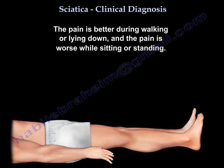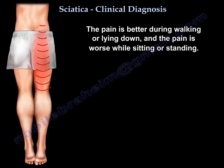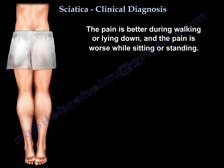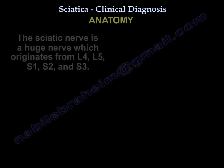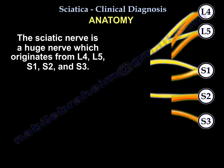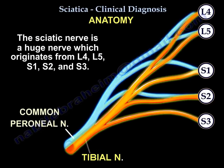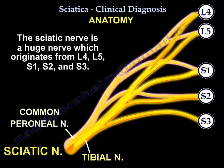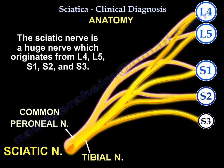Pain is better when the patient is walking or lying down, and worse when sitting or standing. The patient may have low back pain, but it's not as severe as the leg pain. The sciatic nerve has five nerve roots — two from the lumbar spine, L4 and L5, and three from the sacral spine, S1, S2, and S3.